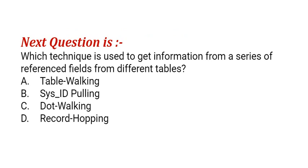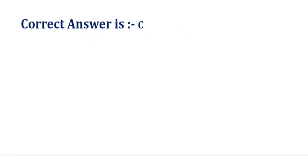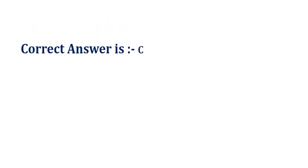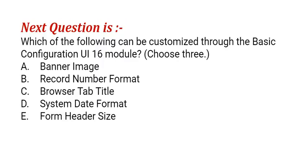Our next question is: which technique is used to get information from a series of referenced fields from different tables? The options are: option A, table walking; option B, sysid pulling; option C, dot walking; option D, record hopping. The correct answer is option C.